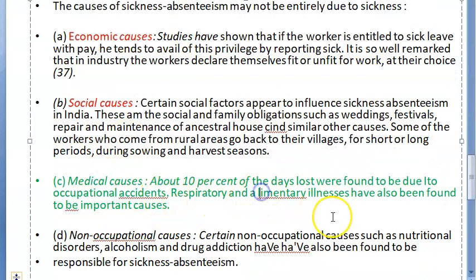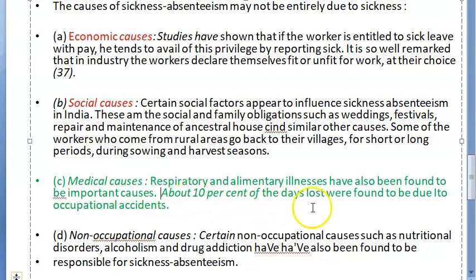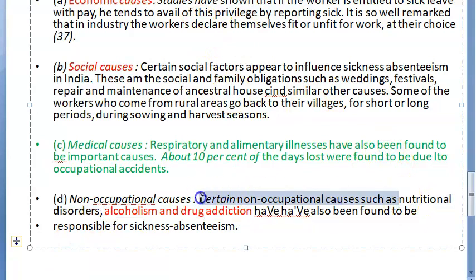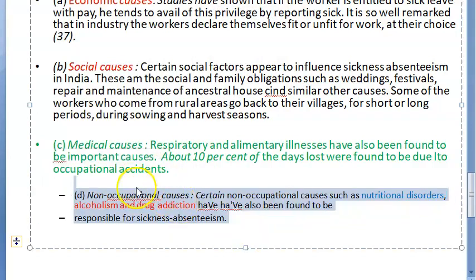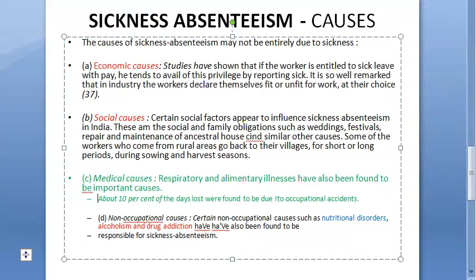Medical causes include respiratory and alimentary illness, which are important causes. About 10% of days lost were found to be due to occupational accidents — workplace injuries. Non-occupational medical causes include nutritional disorders, alcoholism, and drug addiction. So under causes, you have medical (occupational or non-occupational) and non-medical (economic or social).